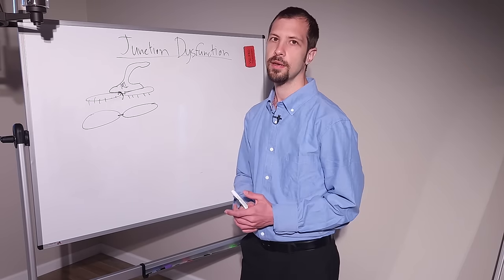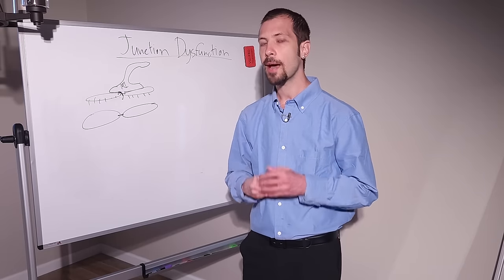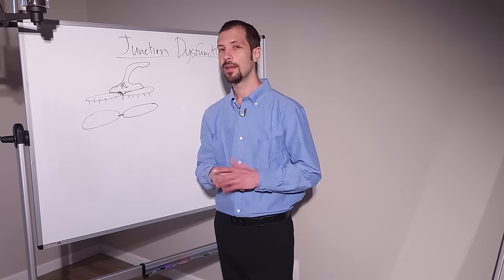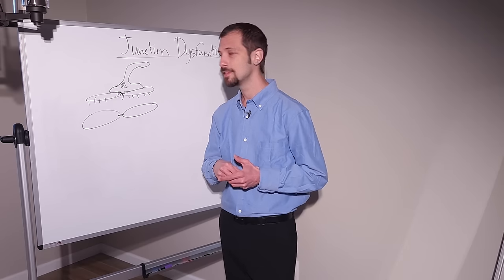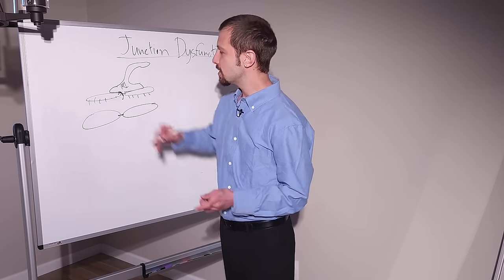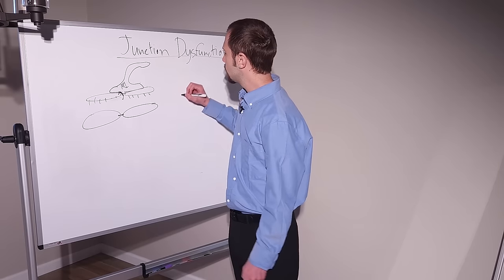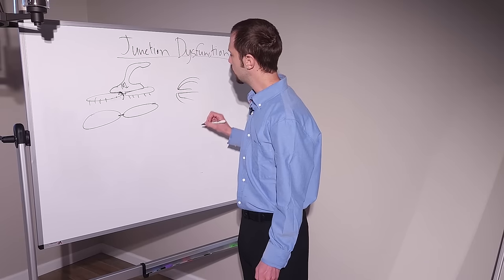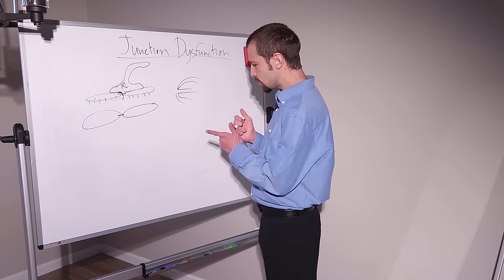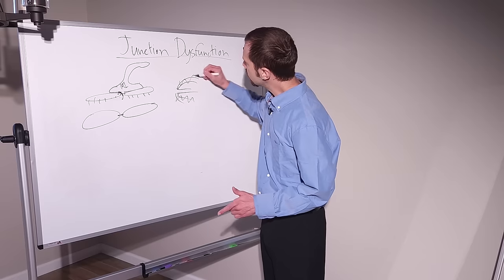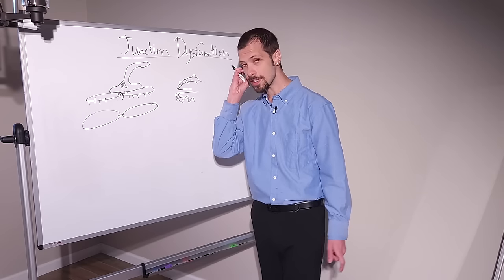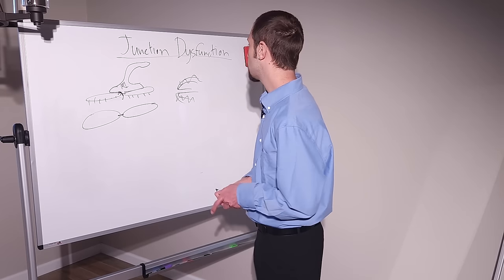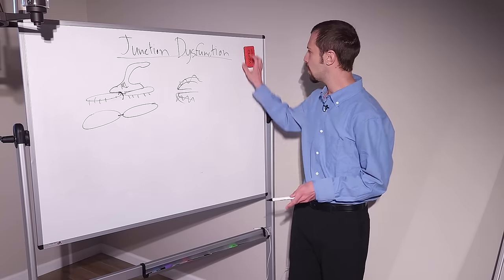This is where you get junction dysfunction — because these junctions are opened when they do not need to be. This happens on a microscopic scale; your microcapillaries in the brain run all over. You need glucose and oxygen to get there. So if you have junction dysfunction here and also destruction of the microcapillaries in the brain, how much oxygen and glucose is getting to those precious brain cells?